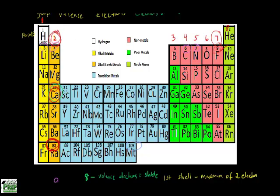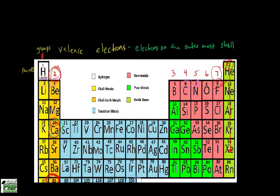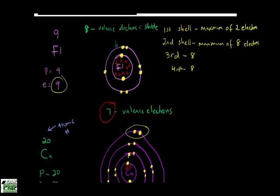Remember, every atom is trying to get 8 valence electrons on its outermost shell to be stable. The elements in group 8 already have 8, so we don't need to worry about them when it comes to losing or gaining electrons. These are called noble gases — they're already stable. Hopefully you now understand how to calculate valence electrons. We'll see you in the next one.